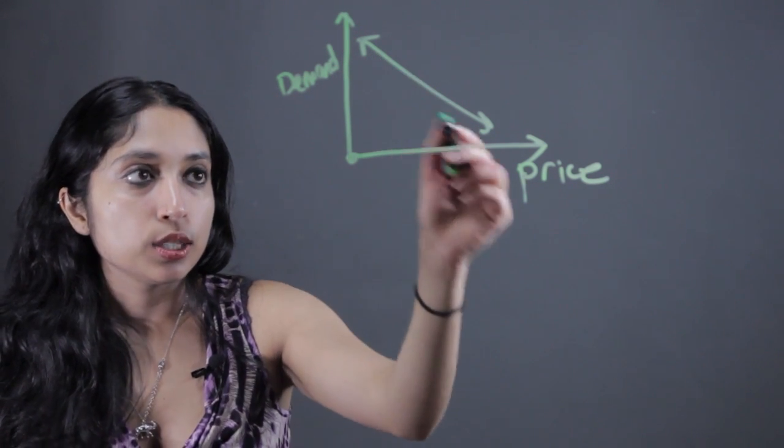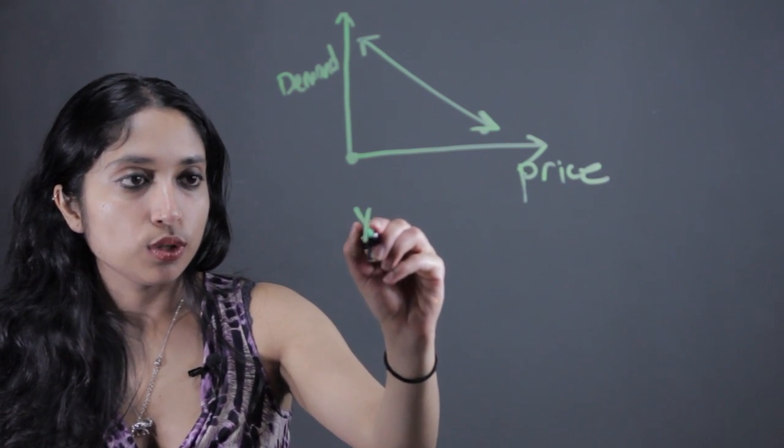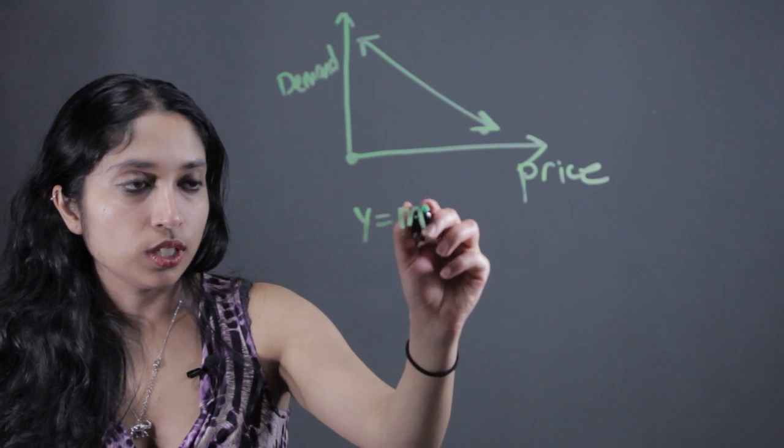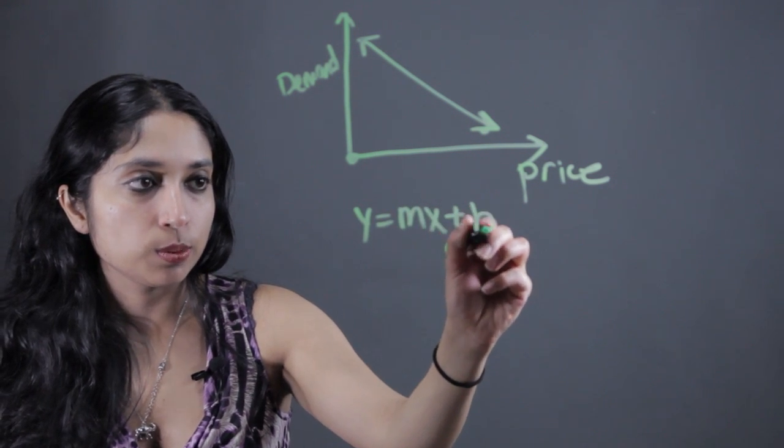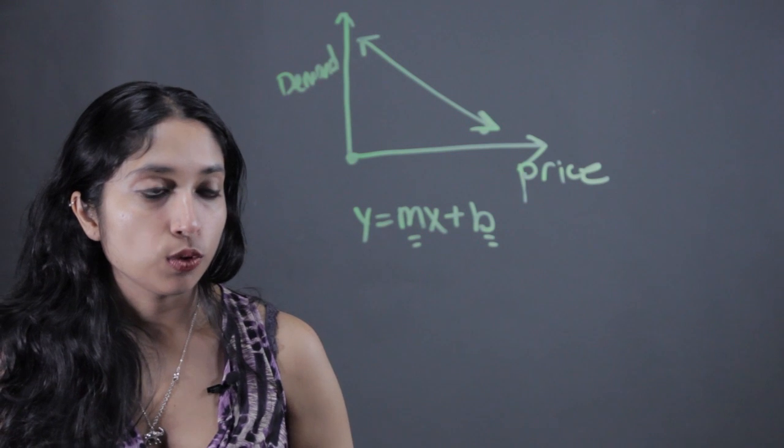A lot of times, the demand curve is approximated by a line. Just to give you a quick idea of what a line looks like, it's y equals mx plus b. This is the equation for a line, where these are two things that we need to solve for.